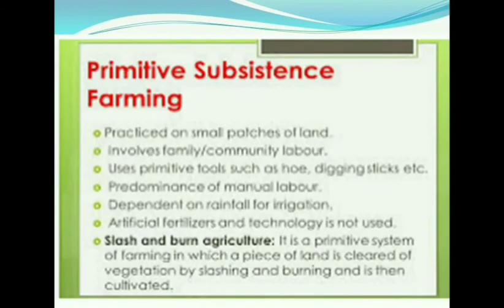Now, subsistence farming is again of two types. The first, as you can see on the screen, is primitive subsistence farming. This kind of farming is found in parts of equatorial and tropical forests where people make use of simple tools and produce food for their own needs.